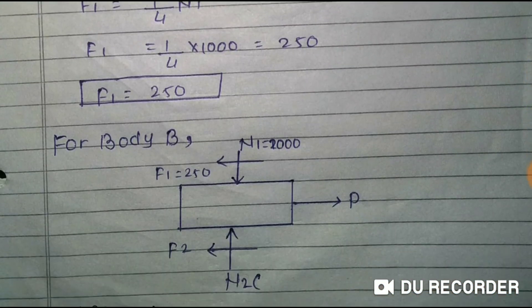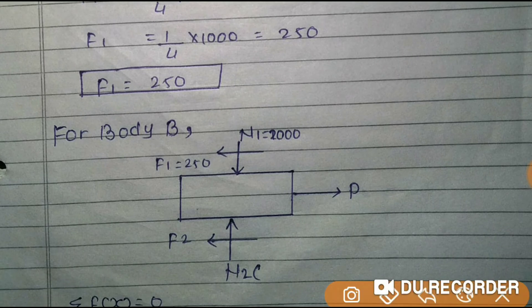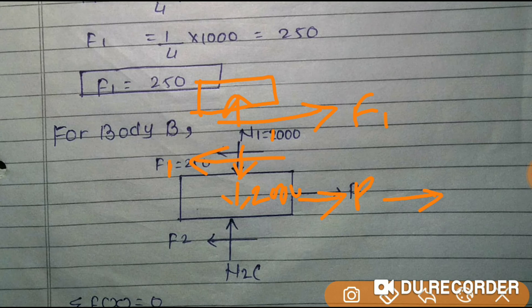Similarly, we have the free body diagram of B. Friction F1 will be on the opposite side. This is F1. Normal here, normal here will be 1000 plus 2000. P force is acting, so opposite direction will be F2 friction, and normal will be N2.